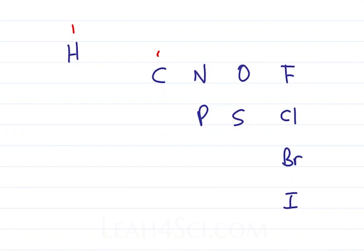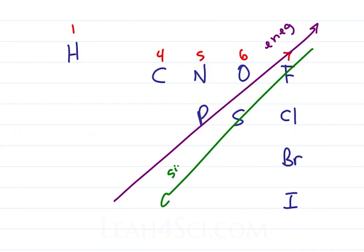Remembering that this is 1, 4, 5, 6, 7. Electronegativity up towards the right, and size down to the left.